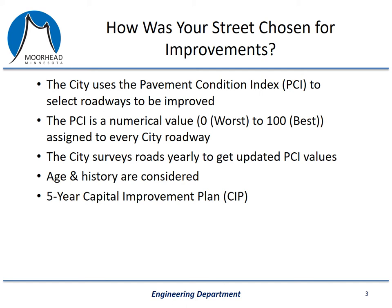Zero would mean that there is no pavement left, that the road is in very poor condition, and 100 would essentially mean that it is brand new construction. Every street within the city gets one of these values, and we update these values yearly. The city hires a consultant to evaluate the condition of the road, and we take that information, we feed it into our pavement management software, and that helps us determine which projects to do based on our budget for the year.